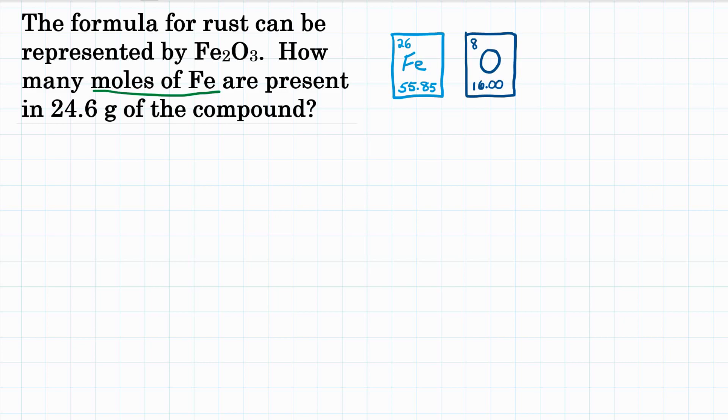If we have 24.6 grams of Fe2O3, of rust, in this problem we're going to have to know the percentage of iron in rust.